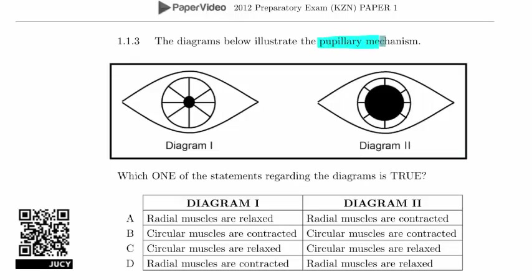We're looking at the pupillary mechanism here, and you can see you've got diagram 1 and diagram 2. They're obviously different because the space in the middle, which we know is the pupil, has changed — the size of the pupil is different.